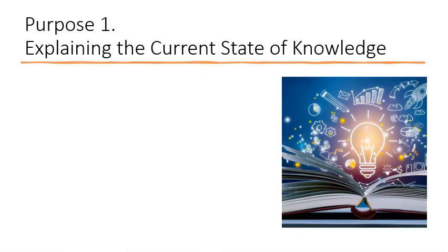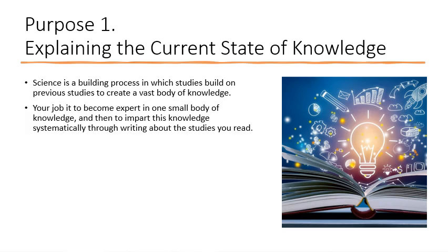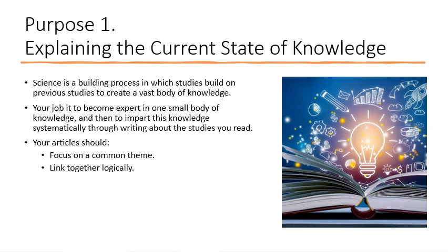The first purpose is explaining the current state of knowledge. Science is a building process in which studies build on other studies to create a vast body of knowledge. Most scientists don't start from nowhere — they start by looking at what questions have already been answered. Your job is to become expert in one small body of knowledge and impart this systematically through your lit review. The articles you keep should focus on a common theme, be empirical, recent — perhaps within the last 10 years — and be original research.